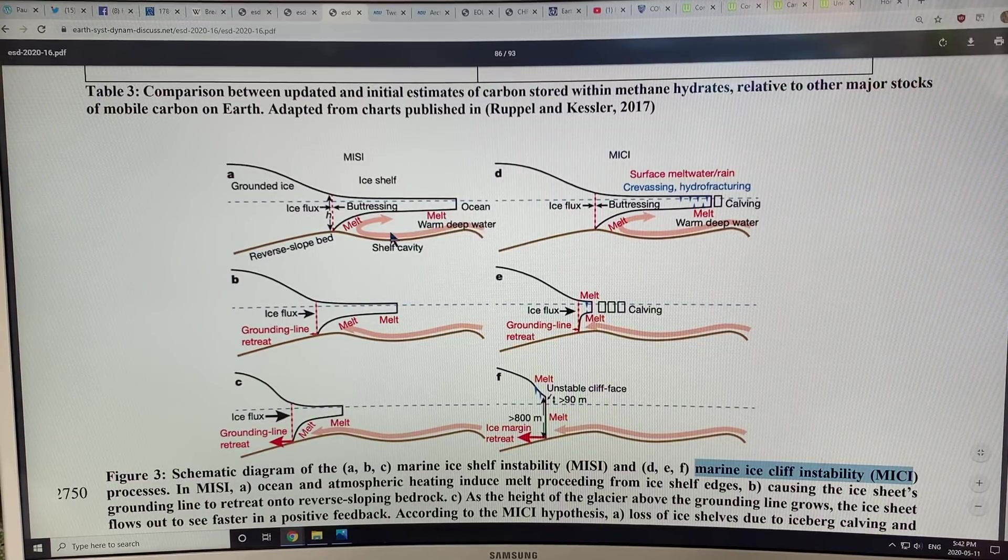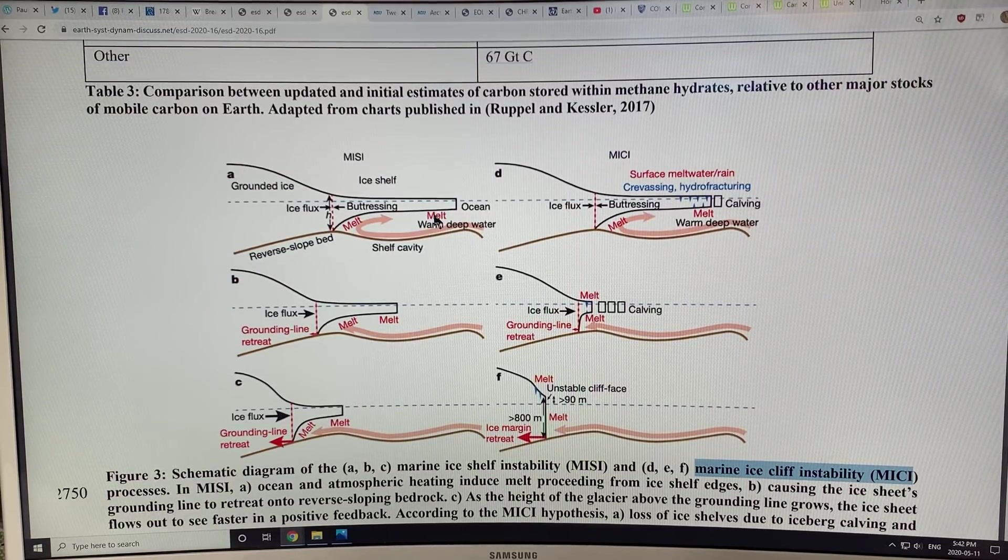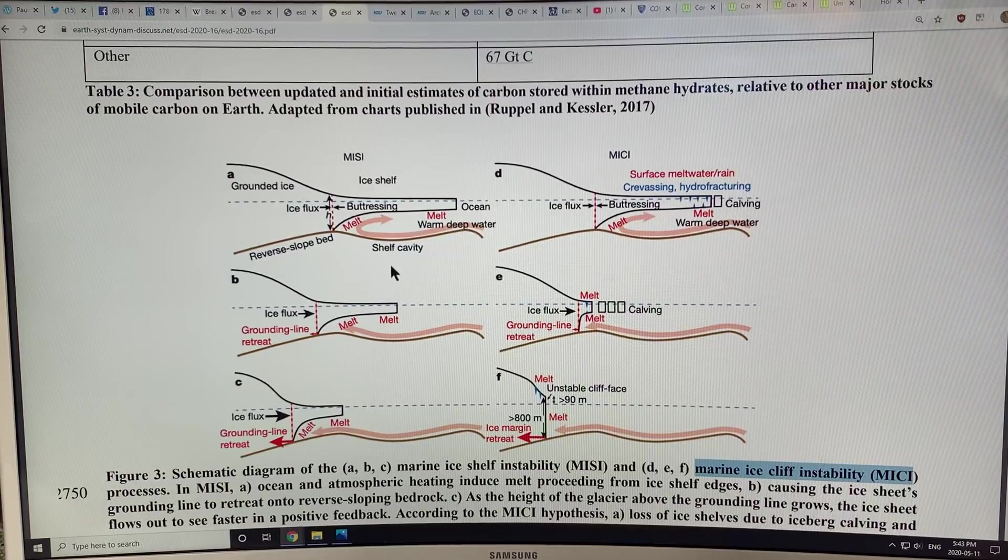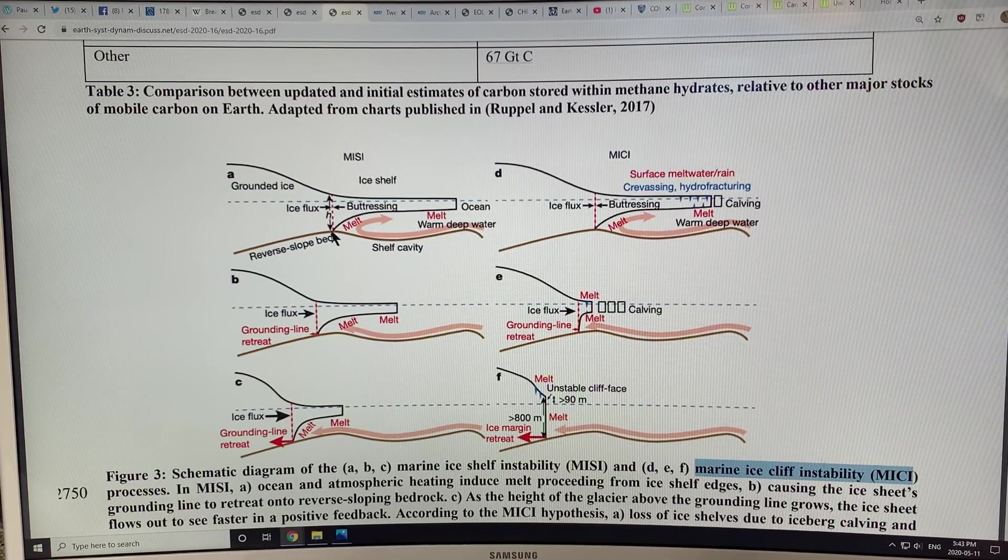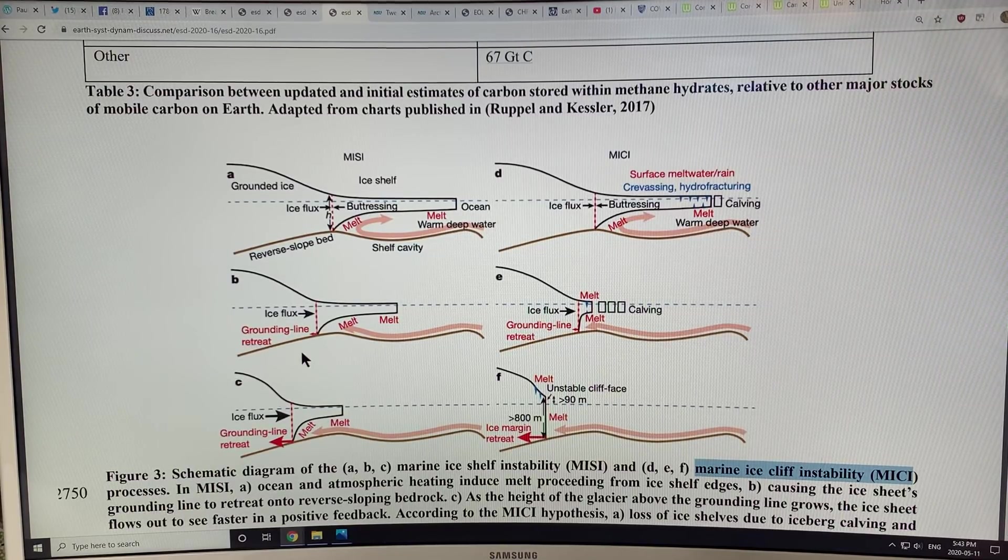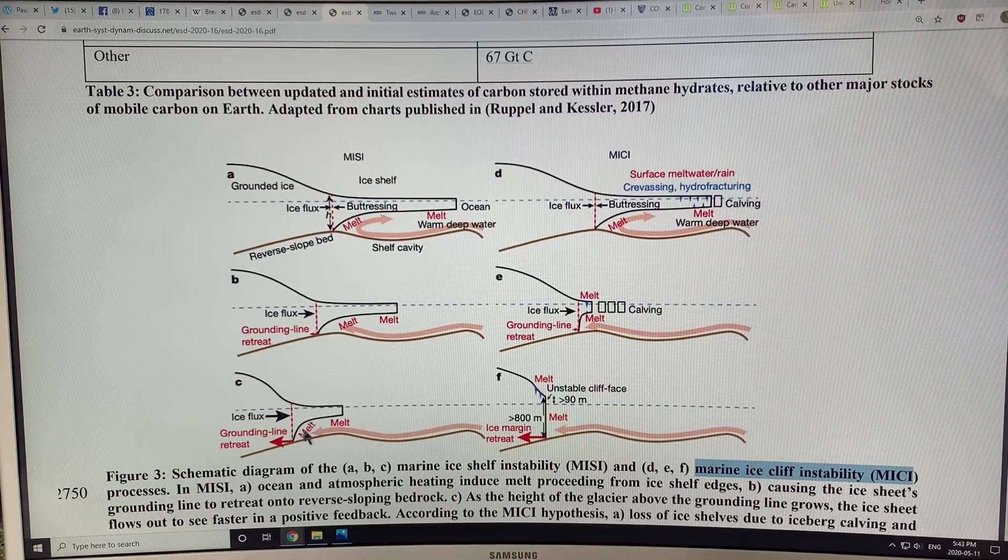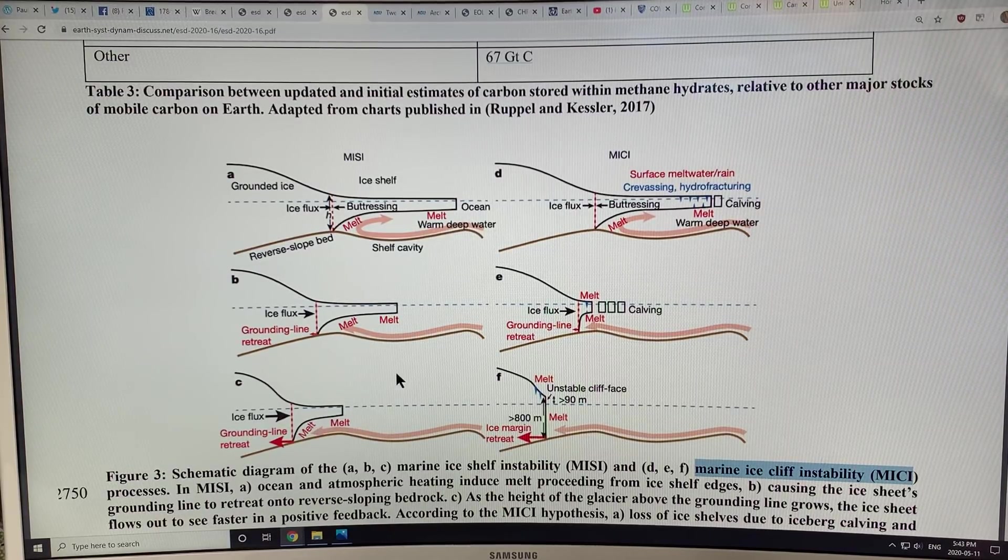We can get warm deep water coming in underneath and melting it from below. This is the primary mechanism in Antarctica. In Greenland, we can also get melting on the surface and below. As the warming continues and the ice starts to retreat, the grounding line can retreat and go into deeper and deeper water, and the ice shelf can retract. Here it continues with further grounding line retreat and loss of the ice shelf.